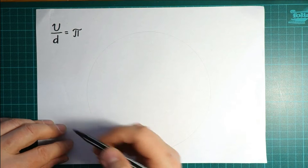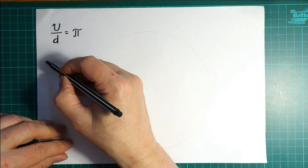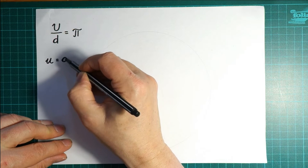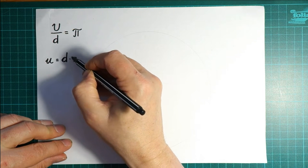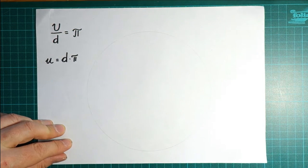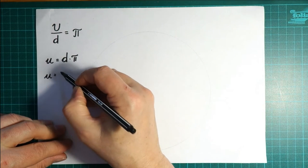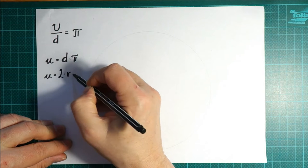That makes our life easier, because if we want to know the circumference from π, or if I'm given the radius, the circumference is the radius times π.